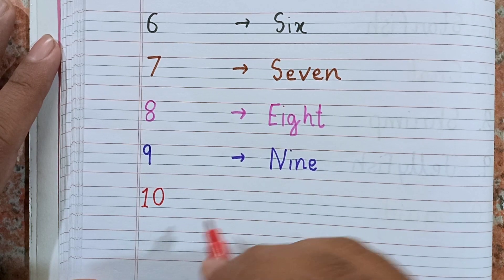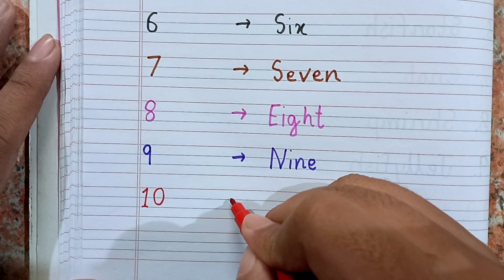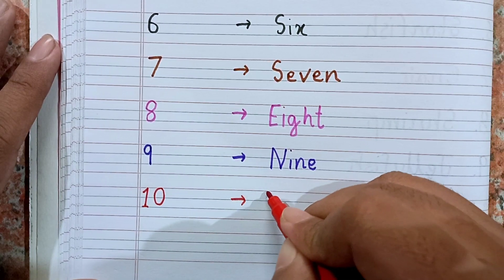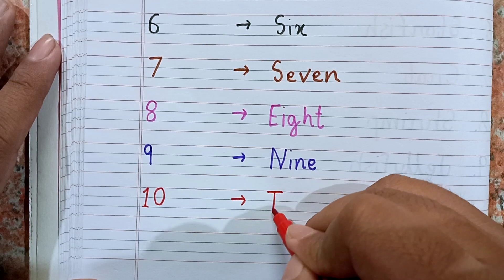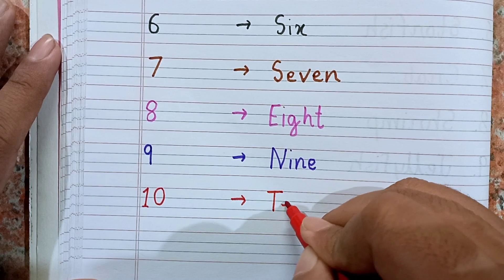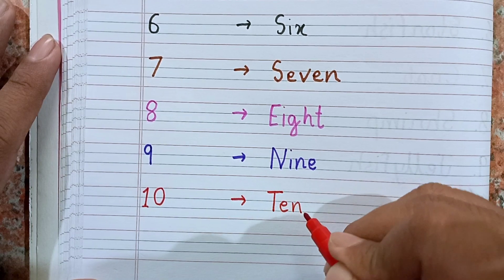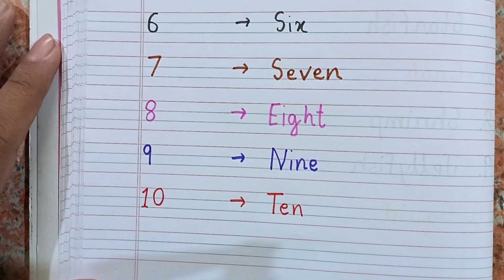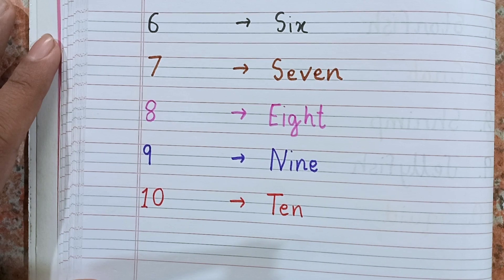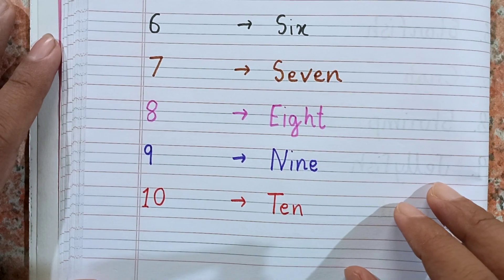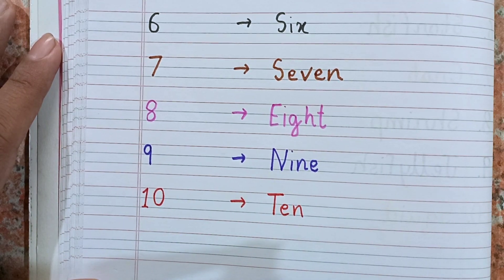This is 10: 1-0, 10. And the spelling of 10 is T-E-N. So till now we have learned from 1 to 10.